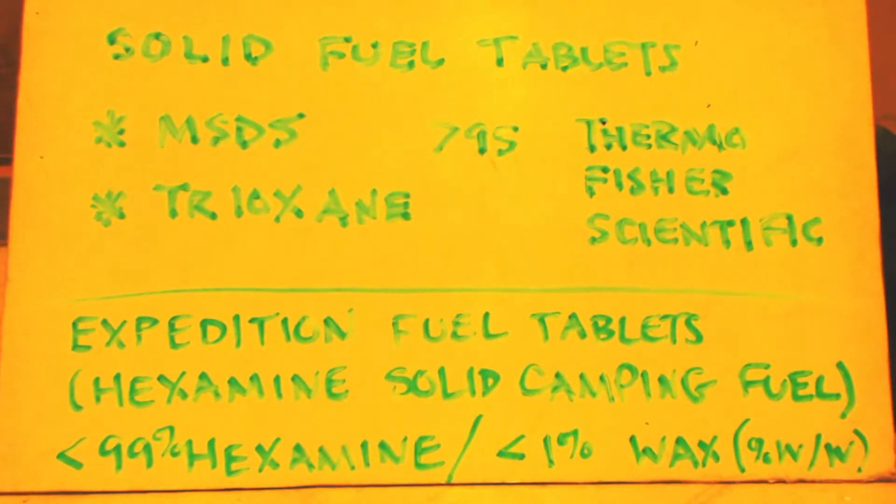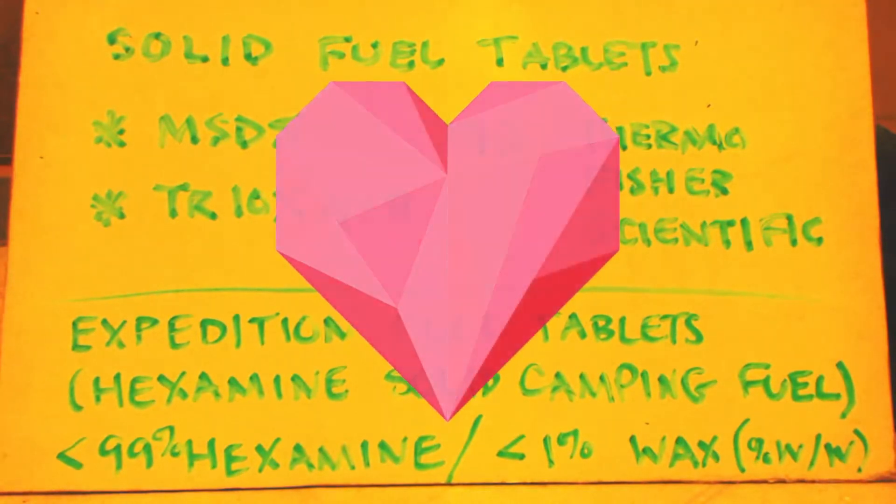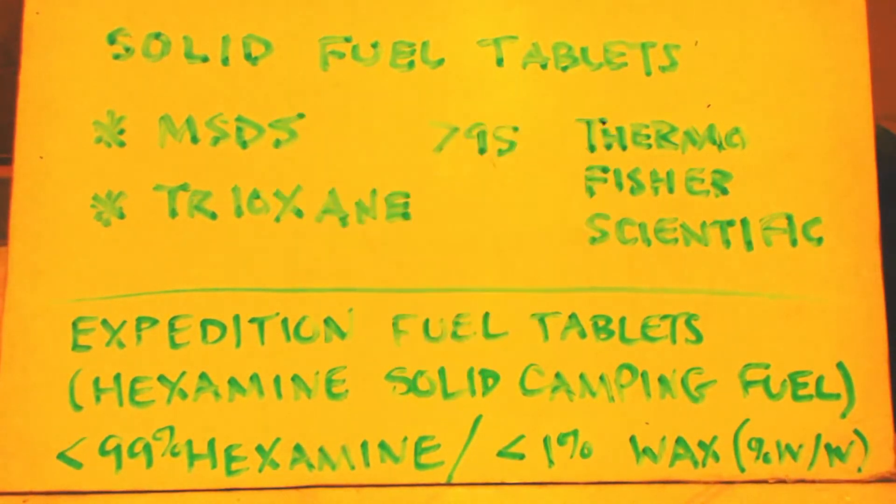This is John White from Breaking Mad here to talk about how to get hexamine. What is hexamine? It's basically used in solid fuel tablets like for campers. If you watch my how to get trioxane video, you'll know it's basically the same thing.